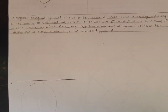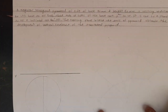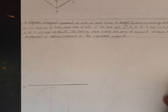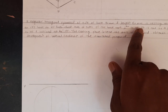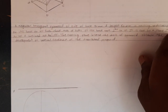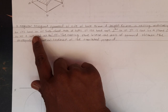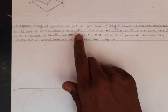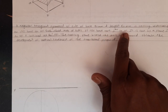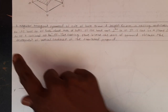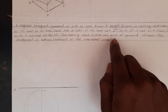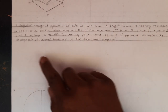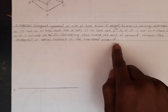Welcome to the next lecture on development of lateral surfaces. In this lecture, we are going to see the development of the hexagonal pyramid. A regular hexagonal pyramid with side of base 30 mm and height 60 mm is resting vertically on its base on HP such that two sides of the base are perpendicular to VP. It is cut by a plane perpendicular to VP and inclined at 40 degrees to HP. The cutting plane bisects the axis of the pyramid. Obtain the development of the lateral surfaces of the truncated pyramid.